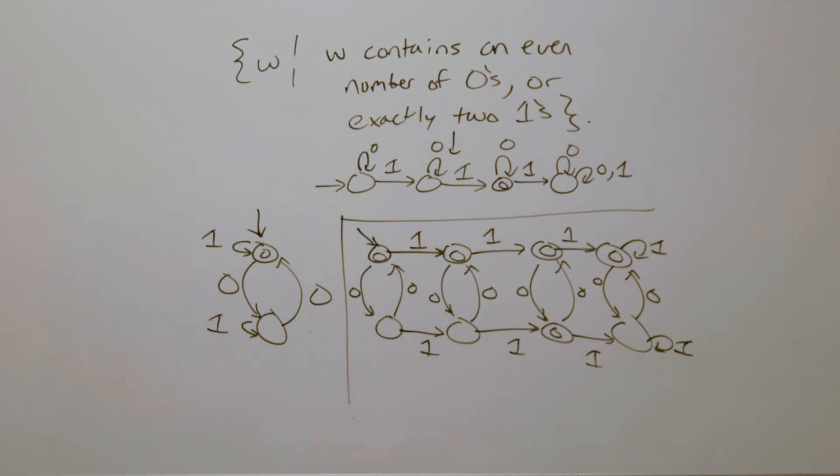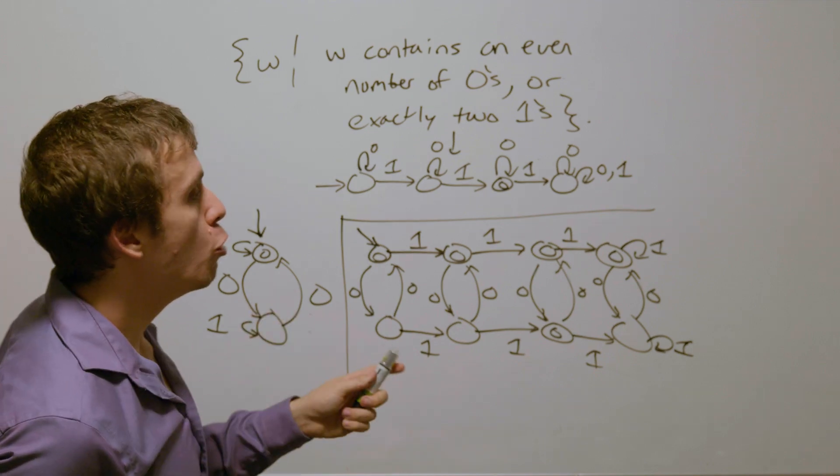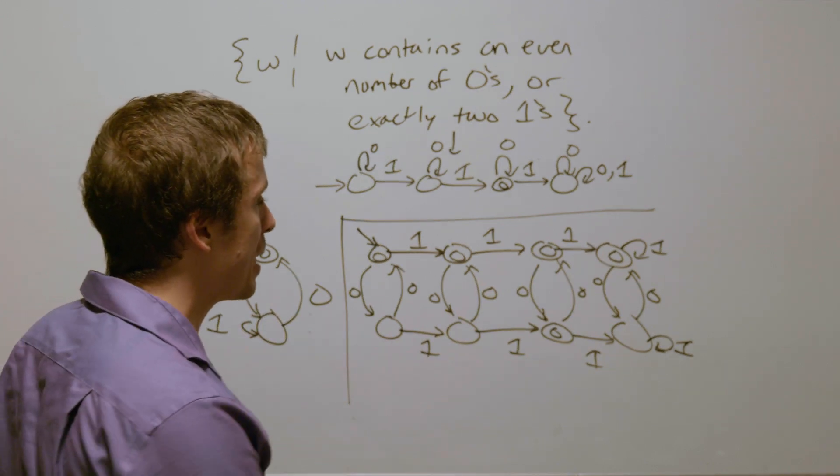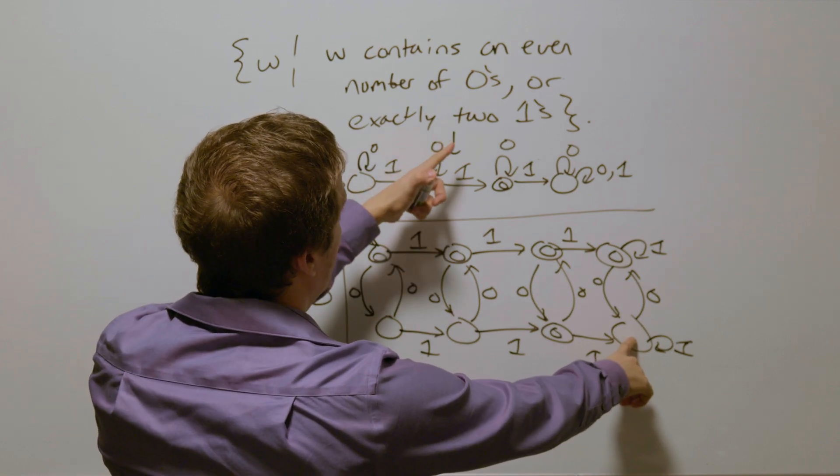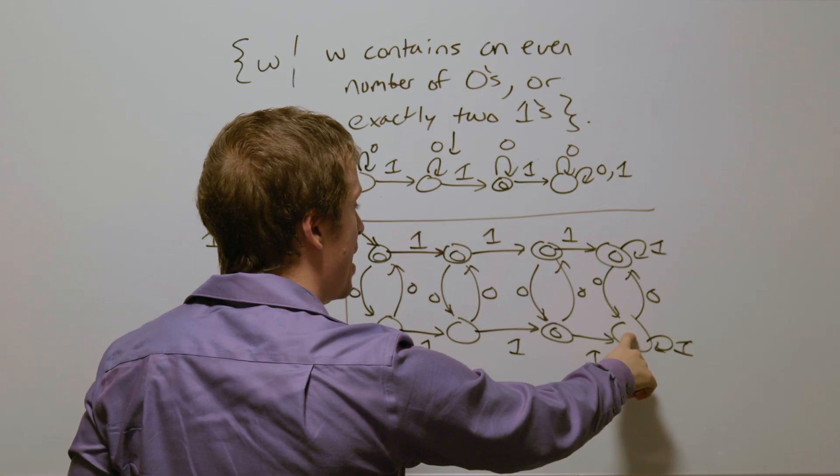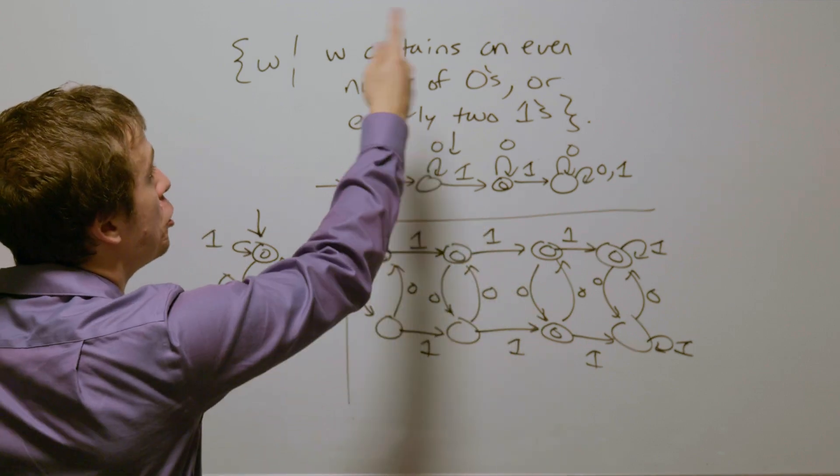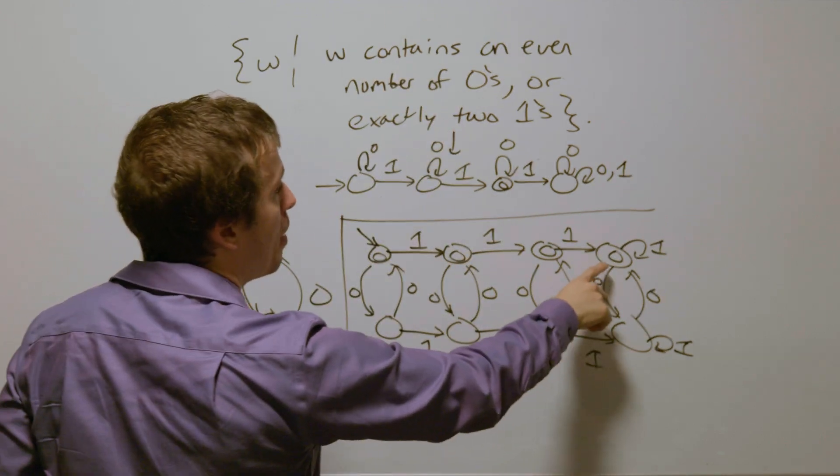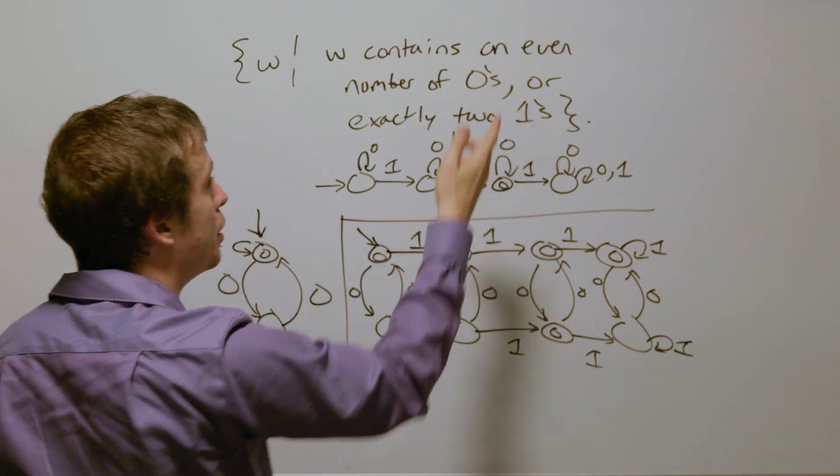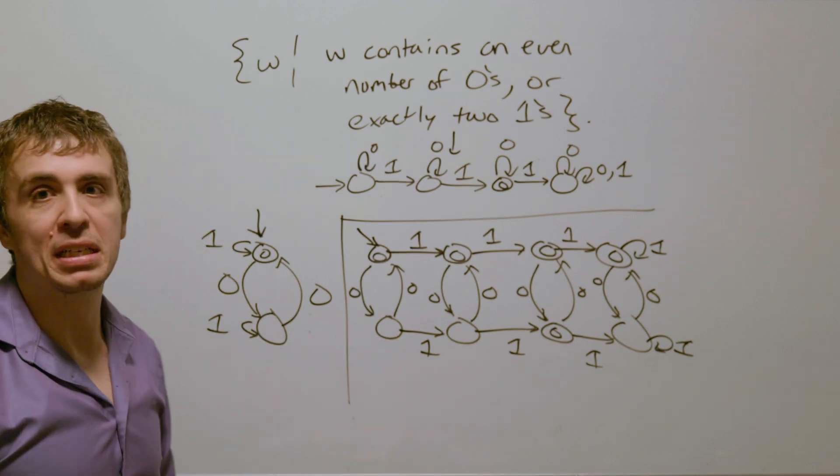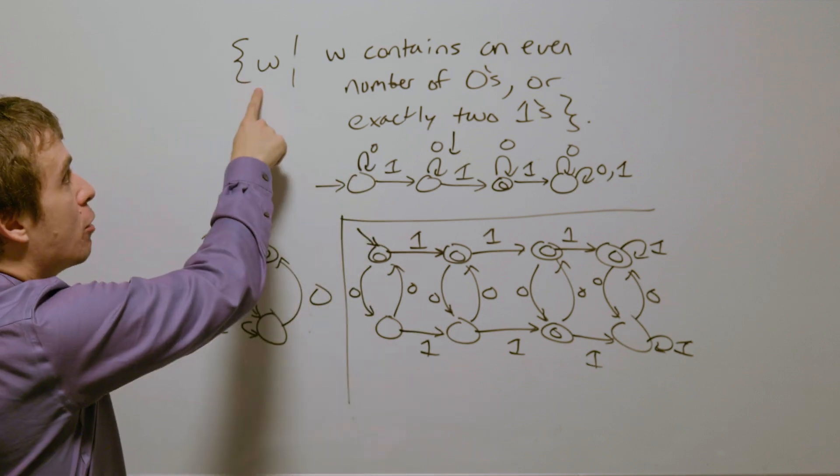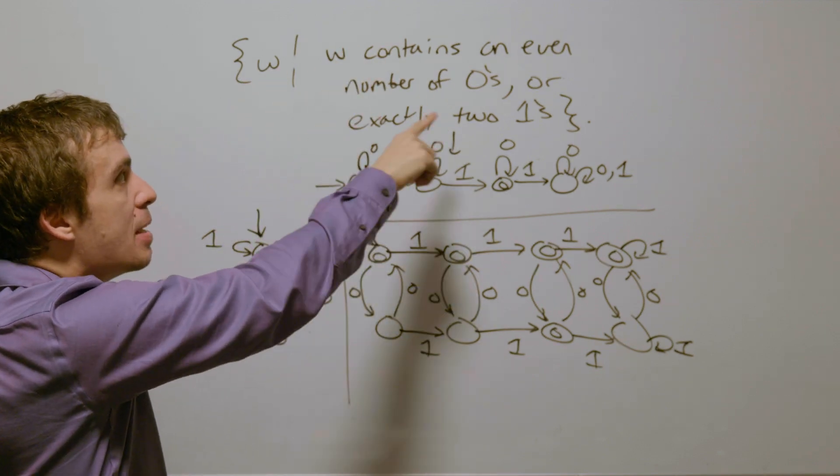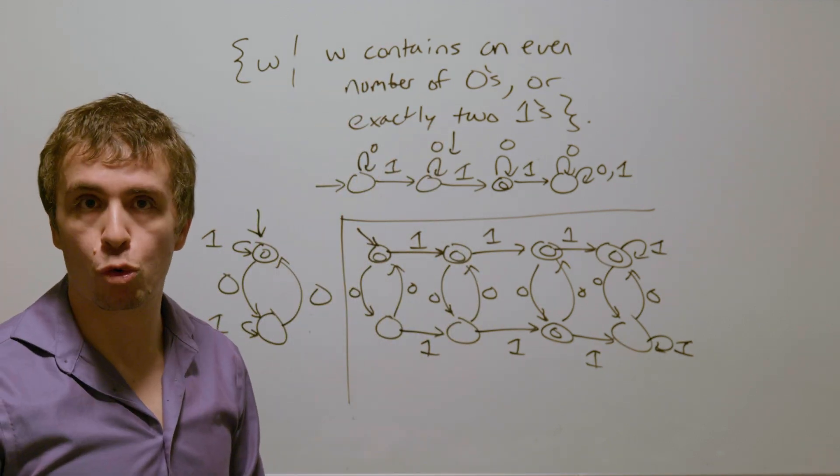So actually something that's kind of interesting is that there's no dead states here, mainly because if we're over here, that means we have read at least three ones, but then we can fix that by changing the number of zeros, and we can always change the number of zeros to become even again. And so therefore, this is a deterministic finite automaton for the language of all binary strings that contain an even number of zeros, or exactly two ones.